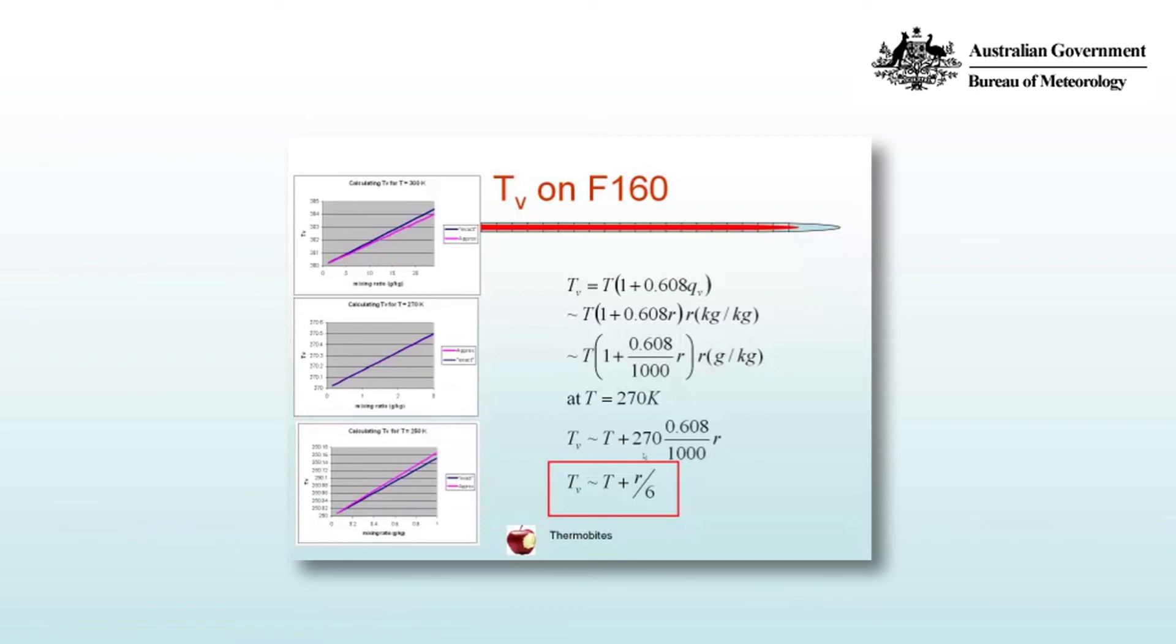When the virtual temperature, or rather when the temperature is 300 degrees Kelvin, we see that the approximation slightly underdoes it by at most about a degree, and when the temperature is 250 degrees Kelvin, the approximation overdoes it by a small amount. You can see it's a fraction of a degree.